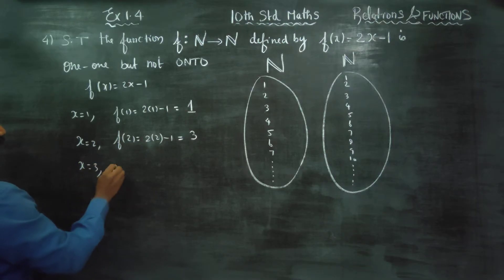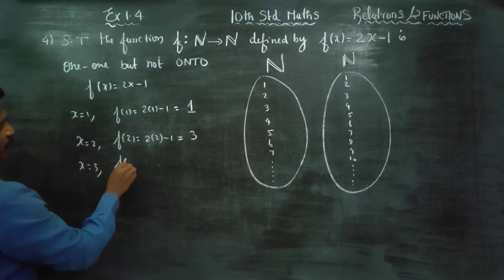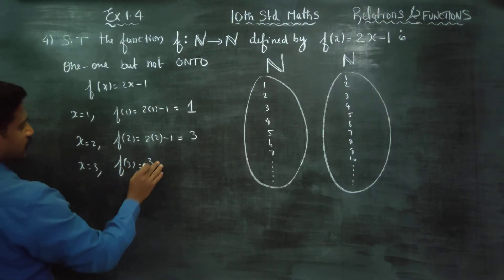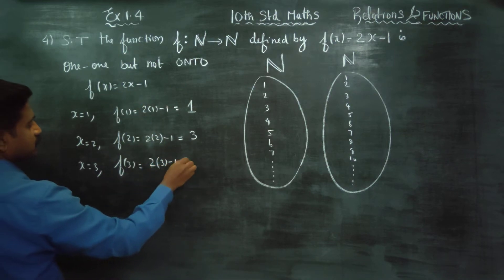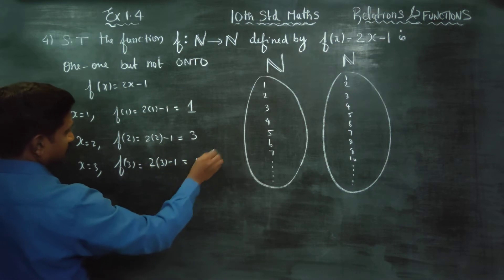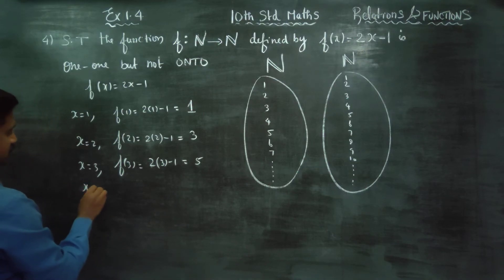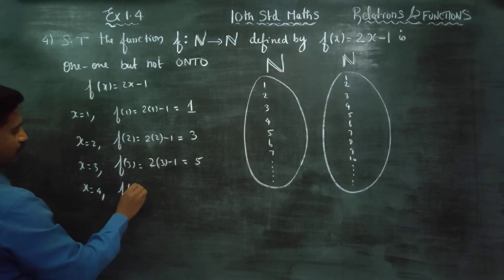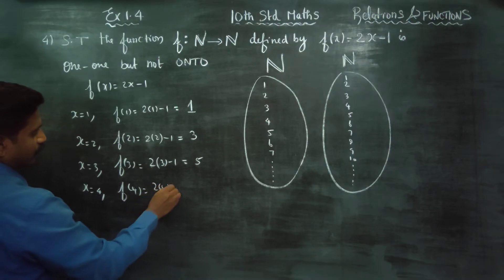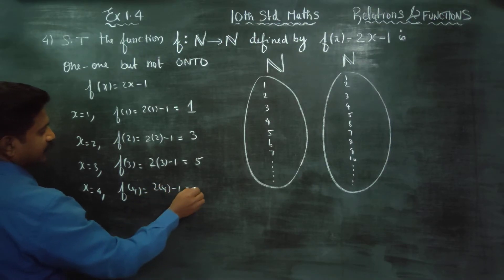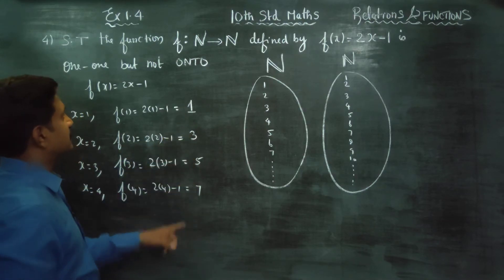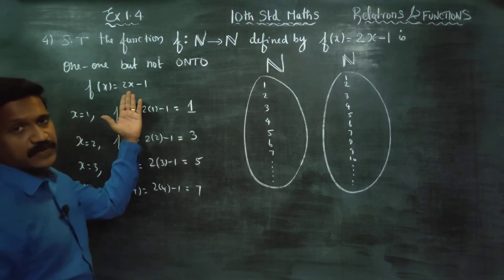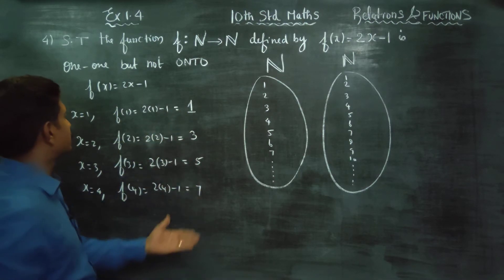x is equal to 3: f of 3 gives 2 times 3 minus 1 — that is 6 minus 1, which is 5. x is equal to 4: f of 4 gives 2 into 4 minus 1 — 8 minus 1 is 7. All results are odd numbers. This is the odd number formula: 2x minus 1 is the odd number formula.